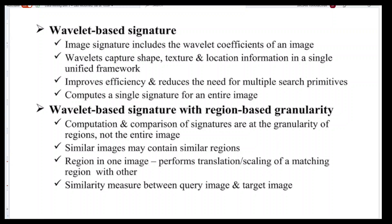Wavelet based signature with region-based granularity focuses on one particular region of an image rather than the entire image. Computation and comparison of signatures are at the granularity of regions. Similar images may contain similar regions. Operations like translation, scaling, and rotation can be performed on regions. Similarity measures between the query image and target image are checked based on region-based granularities.